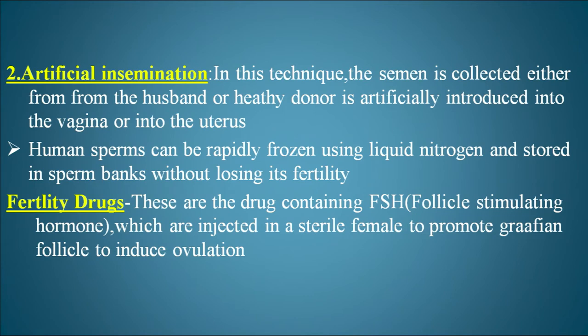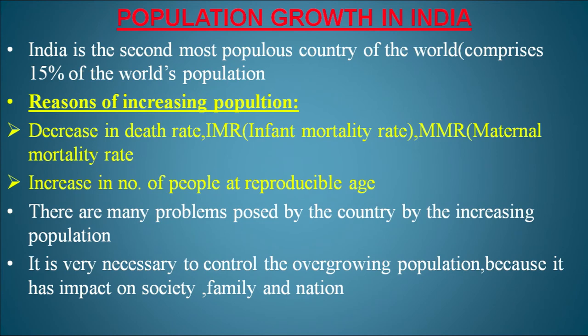Human sperms can be rapidly frozen using liquid nitrogen and stored in sperm banks without losing fertility. Fertility drugs contain FSH (follicle stimulating hormone) and are injected in a sterile female to promote the Graafian follicle and induce ovulation.